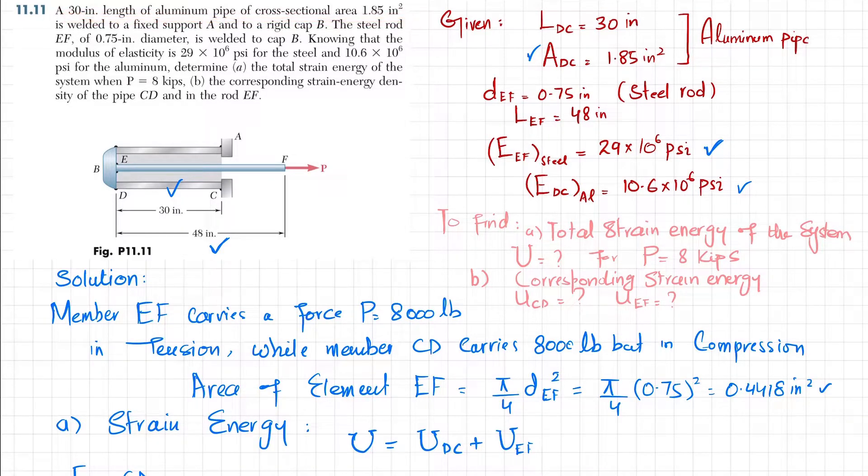You can see this is the pipe CD that is welded at point A, and at point B there is a rigid cap.